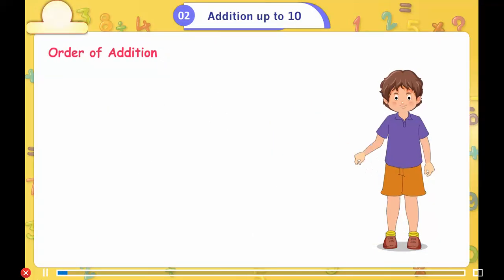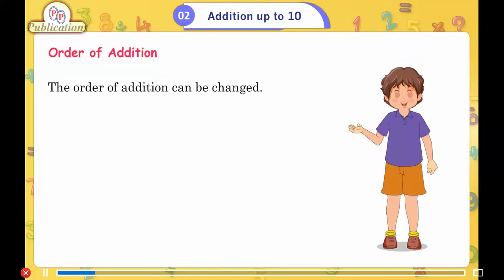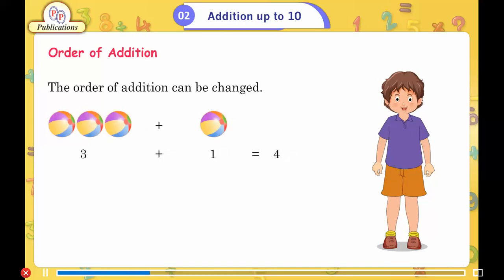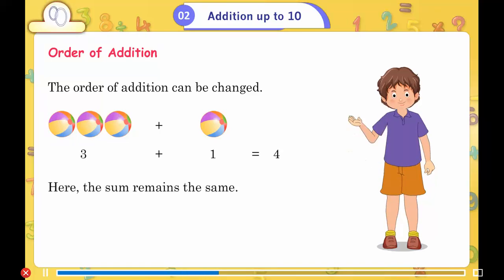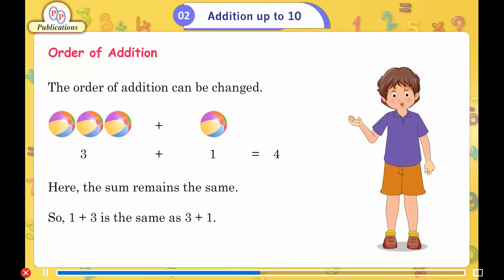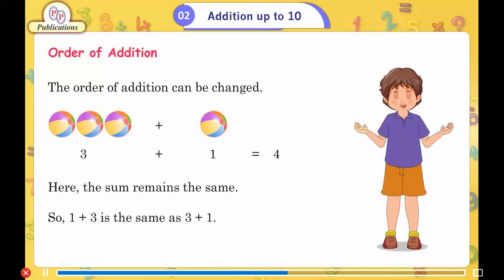Order of addition. The order of addition can be changed. 3 plus 1 is equal to 4. Here the sum remains the same. So 1 plus 3 is the same as 3 plus 1.